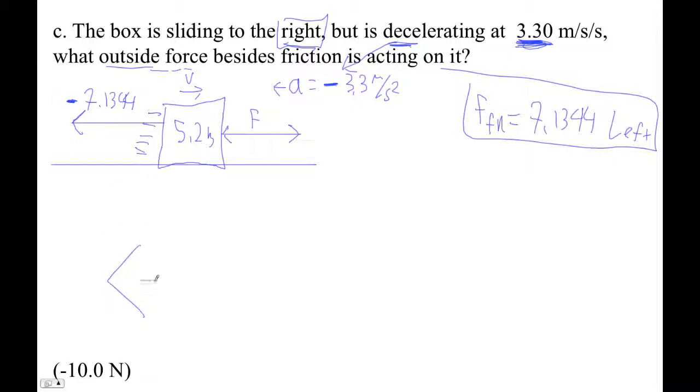Okay, so negative 7.1344 and then just say plus F equals 5.2 times... And now this is the tricky thing. We got the 3.3, it's given to us as a positive number, but the language here is that it's sliding to the right but it's decelerating. So that makes this a negative 3.30, right? Because if I was accelerating to the right, if it was a positive acceleration, I'd be accelerating, I'd be going faster and faster.